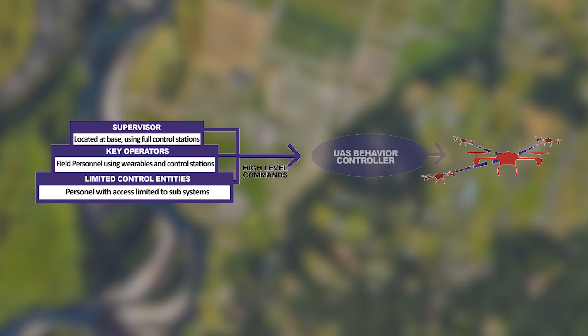The system includes a flexible three-echelon control hierarchy and a customizable high-level command set to allow simple commands to result in complex actions. The supervisor governs how the system operates and who has access to controls.